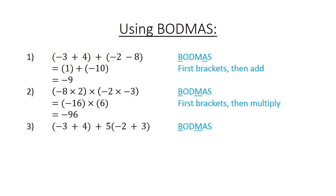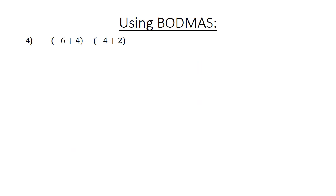In brackets (negative 3 plus 4), close brackets, plus 5, in brackets (negative 2 plus 3), close brackets. First simplify your brackets: 1 is the first bracket, plus 5 times 1, equals 1 plus 5. Using bad math: in brackets (negative 6 plus 4), minus in brackets (negative 4 plus 2). First simplify your brackets: negative 2 minus negative 2 equals negative 2 plus 2 — a minus times a minus is positive — so equals 0.